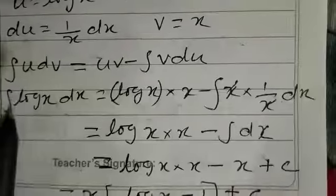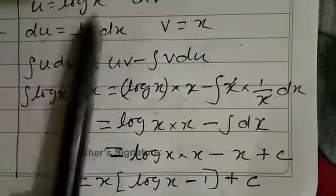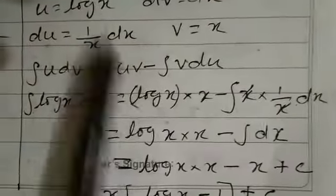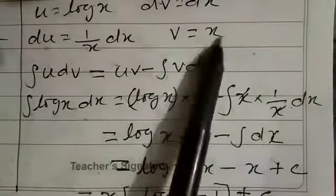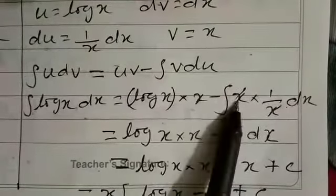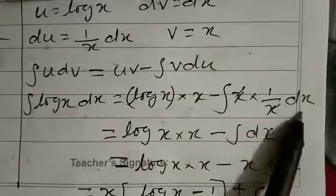Just write all the values. Integration of, for u we have to write log x, for dv dx. Equal to for u log x into v value x, and then minus integration of for v x into for du, du means that is 1 by x into dx.